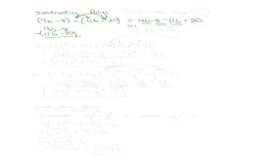Now we combine like terms: the b's and the constants. 9 minus 11 gives negative 2b. And negative 8 plus 20 gives 12. And that's it.